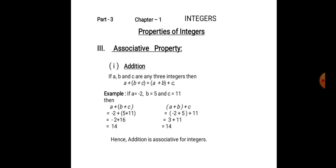then a plus (b plus c) is equal to minus 2 plus (5 plus 11). 5 plus 11 is 16. Minus 2 plus 16 is 14. On the right hand side, (a plus b) plus c is equal to (minus 2 plus 5) plus 11. Minus 2 plus 5 is 3. 3 plus 11 is 14. Both left hand side and right hand side are equal. Hence, addition is associative for integers.